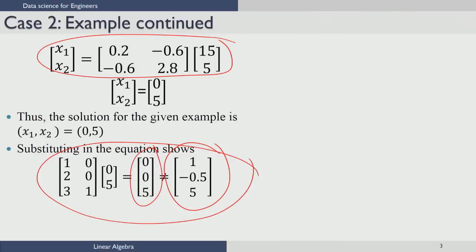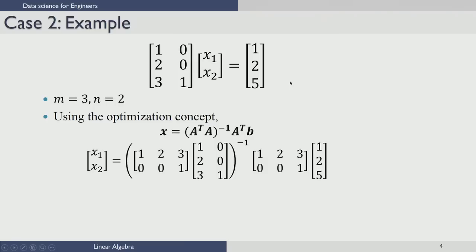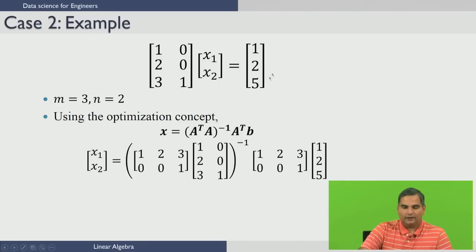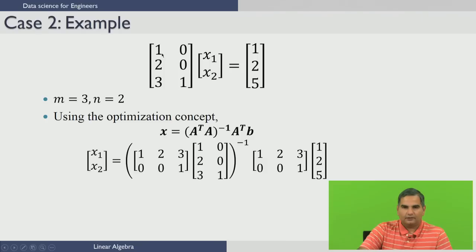We will now move on to the next example. Let us consider another example to illustrate something different. We have taken the same left-hand side — the same A matrix — however, the right-hand side has been modified to be [1, 2, 5]. We have done this for a specific reason which we will see presently. When you look at this equation, if you take the first equation, it reads as x1 equal to 1.